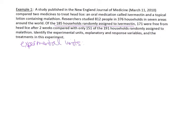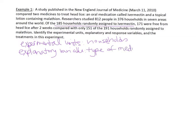This was deliberately a tricky example to show that experimental units aren't always individual humans — they can be something like a household. The explanatory variable is generally going to be the treatments that subjects receive, so here the explanatory variable is the type of medicine given.